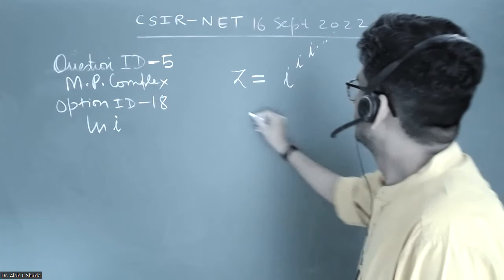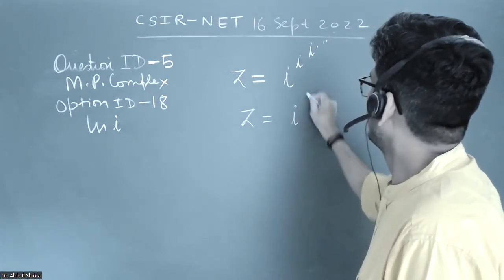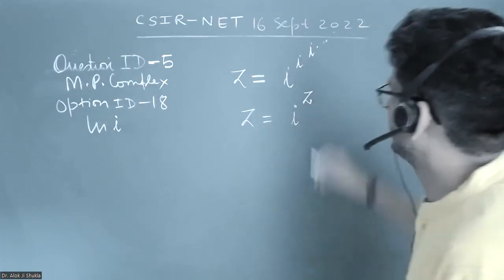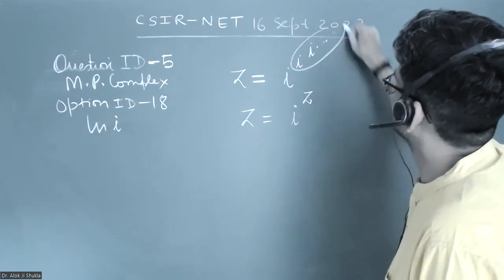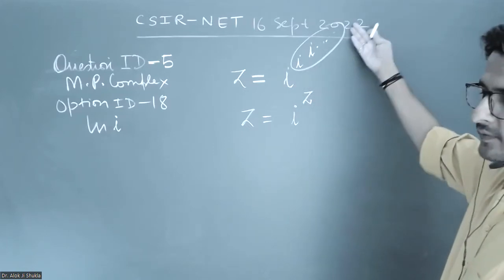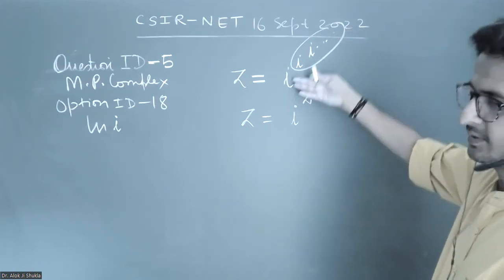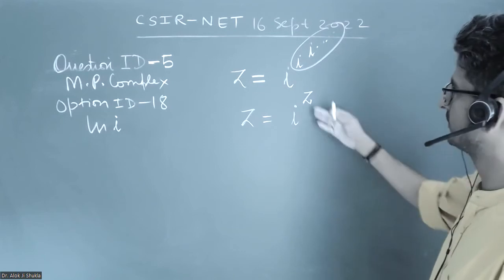Because iota to the power iota to the power iota—we have taken this much—if I take one iota out of this, nothing will change because there are infinite iotas. So I have written it again as z.